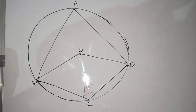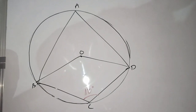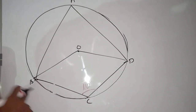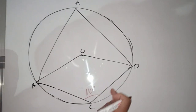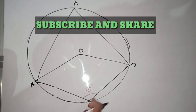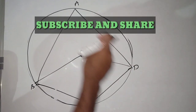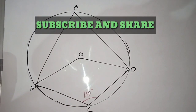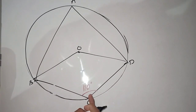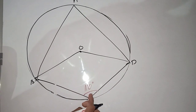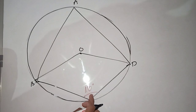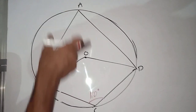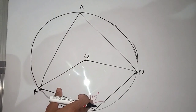Let's say A, B, C, D. The four marks are in one circle. This one is 110, and this one is A. The opposite one is 180.